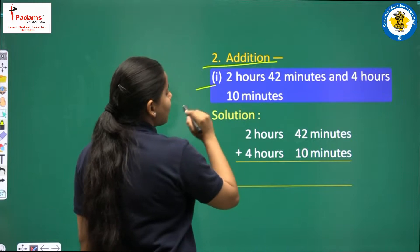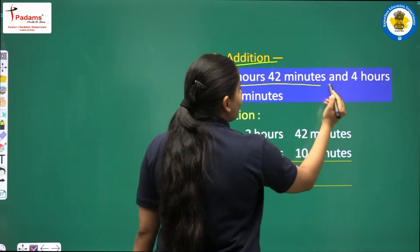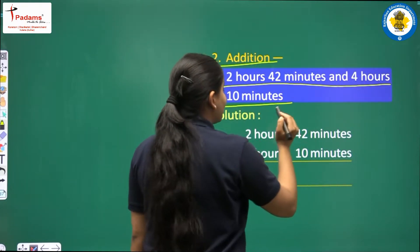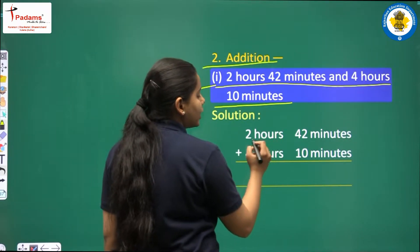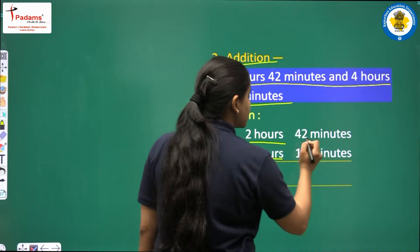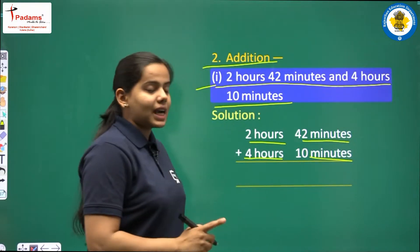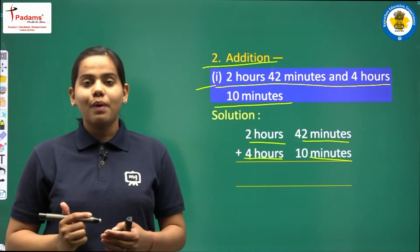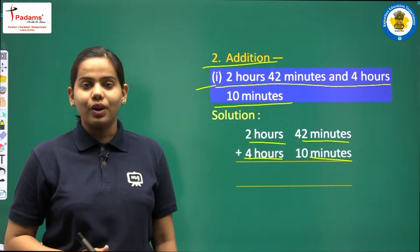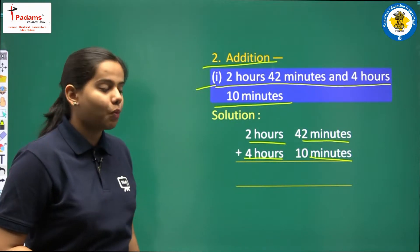Question is addition, first part is 2 hour 42 minutes and 4 hour 10 minutes, here we have to add it. So in two columns, you know that we have written first hours, then minutes. Because addition and subtraction is done in the same units. Minutes, we will add minutes, hours, we will add hours. We will start here from the smaller unit. First of all, we will add minutes.